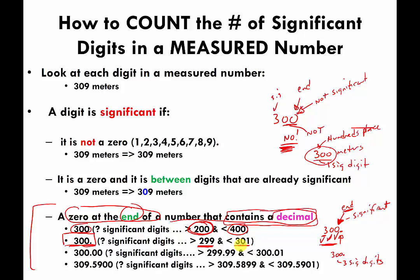Think of these rules as a code for people who've been taught them. Writing 300 without a decimal point is a code saying: my measurement is only good to the hundreds place. Writing 300 with a decimal point is a tip-off that the measurement knows the hundreds place, the tens place, and the ones place. It's just a little clue to people in the know.